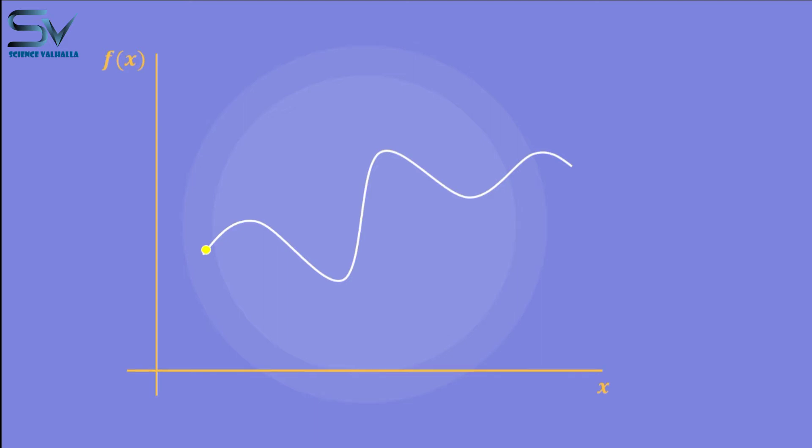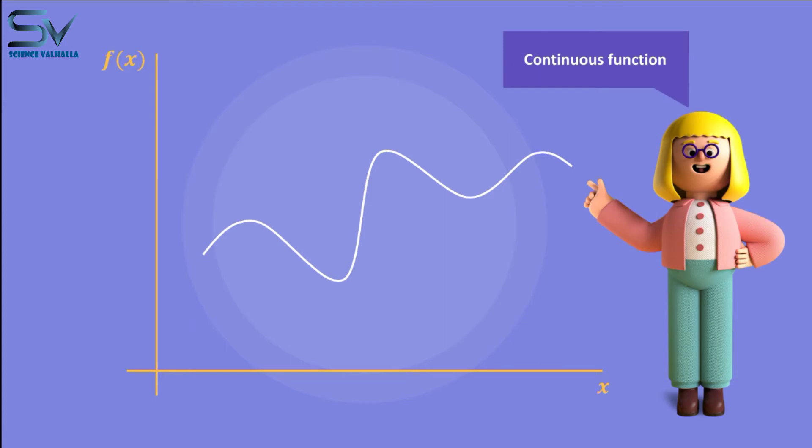Pay attention to this dot now. You can see that I didn't lift this pen even once while drawing it. In other words, if you draw a curve without lifting your pen, it will be a continuous curve. This is referred to as a continuous function.